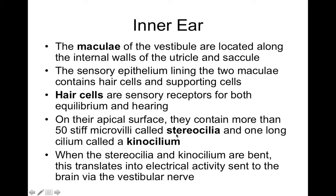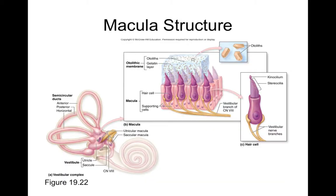When the head moves, otoliths push on the underlying gelatinous layer, causing the stereocilia to bend, which translates to linear acceleration of the head — basically tilt. When your head is upright in anatomical position, the otolithic membrane isn't bent; it's horizontal with the rest of the macula, and gravity exerts an even force along the edge of the macula.